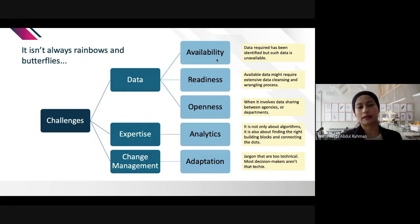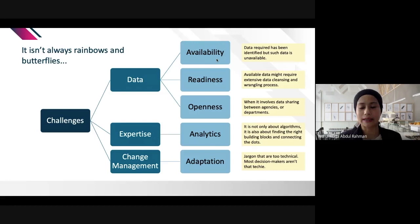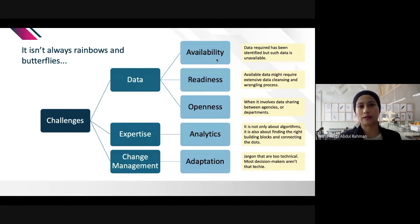Only when you have the right data will your analysis be accurate. Openness is another challenge — especially in government, data sharing between agencies and departments is difficult. Agencies have doubts about sharing data and concerns about data security, not wanting to expose their data too much. Most data scientists have experienced this situation.